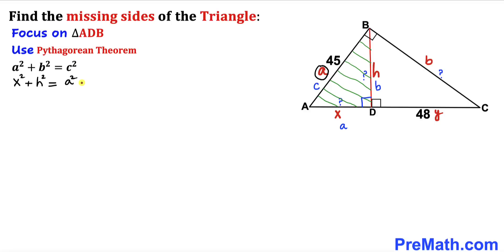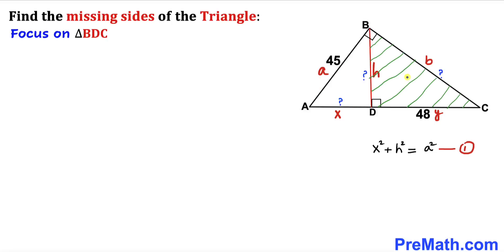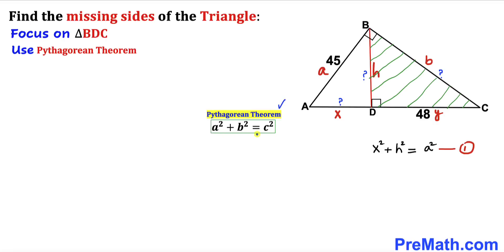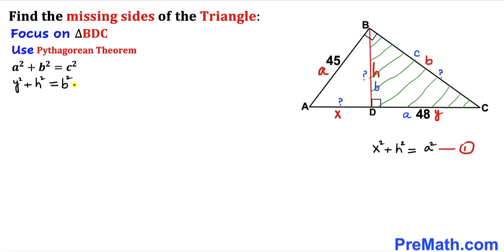Now let's focus on triangle BDC, which is also a right triangle. Applying the Pythagorean theorem again: the hypotenuse is b, the two legs are Y and H. So A is Y, B is H, and C is b. Filling in the formula gives us equation 2: Y² + H² = b².